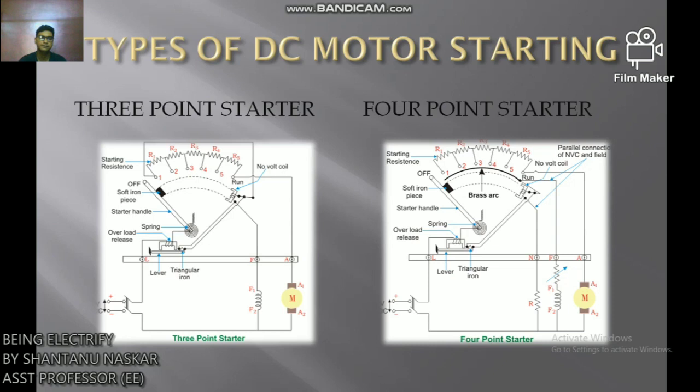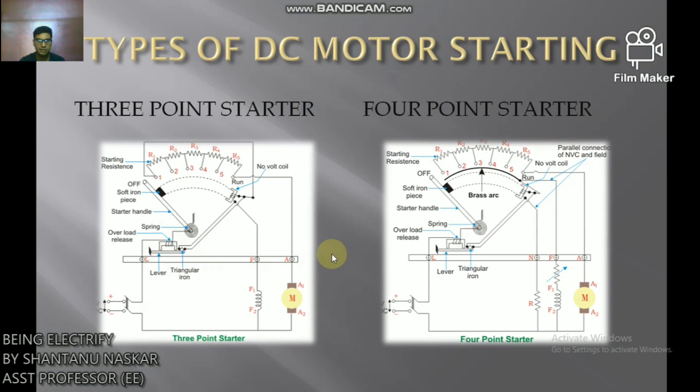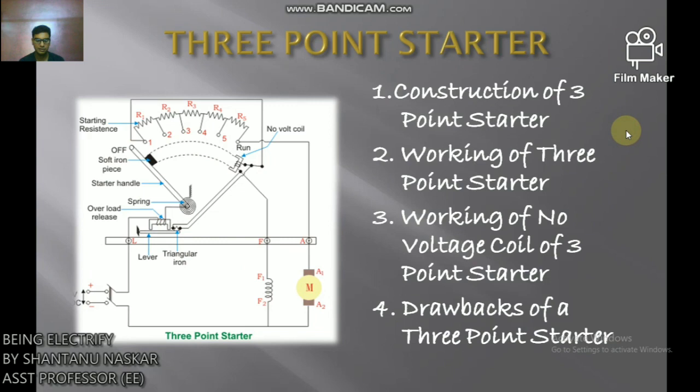There are two types of DC motor starters: one is the three-point starter and the other is the four-point starter. The three-point starter has three terminals L, F, A — so it's called a three-point starter. The four-point starter has four terminals L, N, F, A — so it's called a four-point starter.